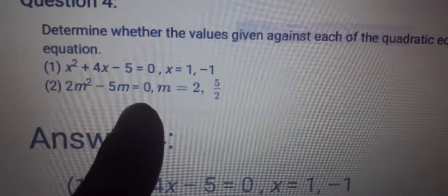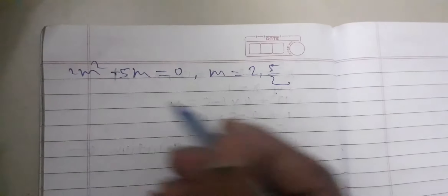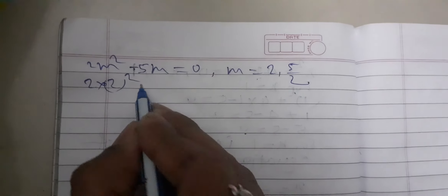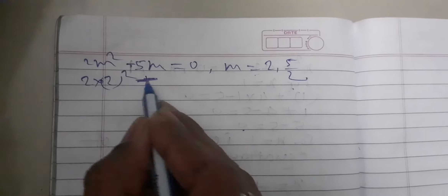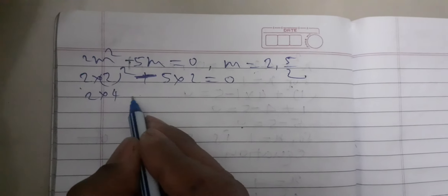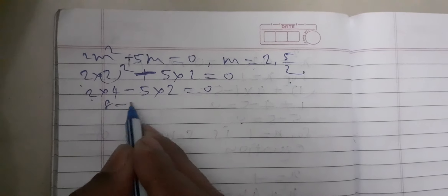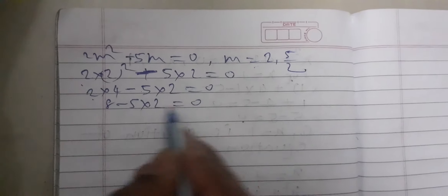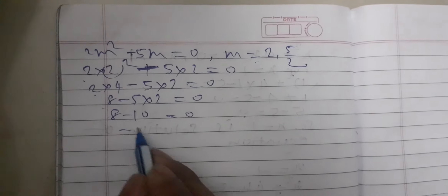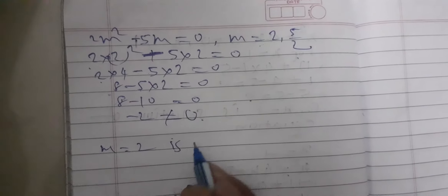Next question: 2m² - 5m = 0, where m = 2 or m = 5/2. Taking m = 2: 2(2)² - 5(2) = 0. That gives 2 × 4 - 10 = 0, which is 8 - 10 = -2 ≠ 0. Therefore, m = 2 is not a solution.